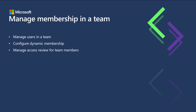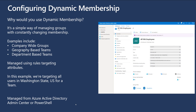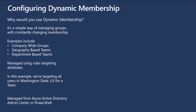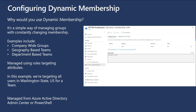Access reviews are really important for controlling how many people are in a team — for example, those who may have been there 30, 60, or 90 days and don't need to be there anymore. Really handy for guests. You can configure dynamic membership, which is a simple way to manage groups with a constantly changing membership. In this example, I've created a group for all Washington state-based employees, but you can go for company-wide groups or department-based groups and build a rule that enables you to target specific attributes in AAD. AAD will update the membership and add them into the team automatically. You need to create the team and the Microsoft 365 group before you can amend any of these dynamic membership rules.